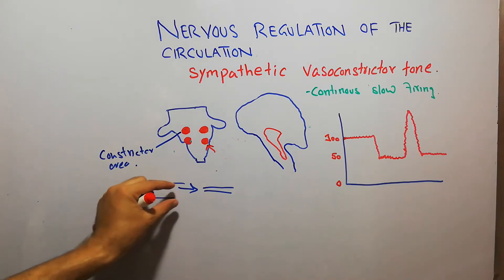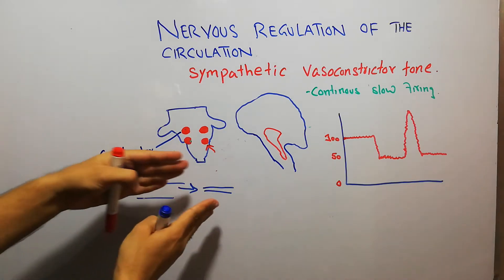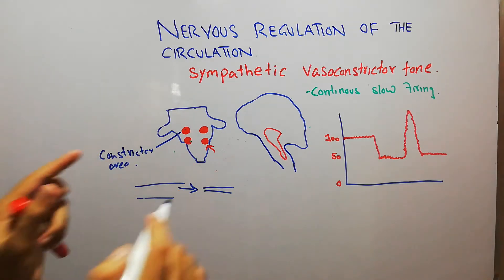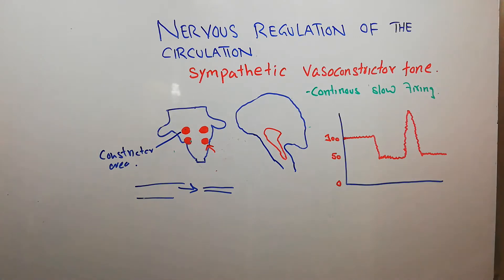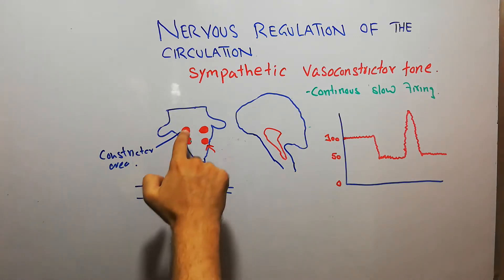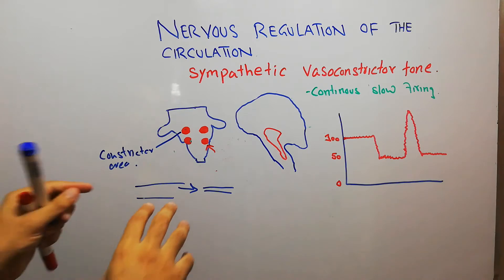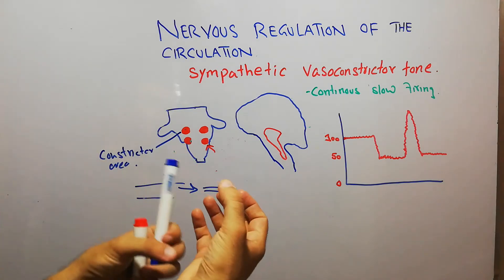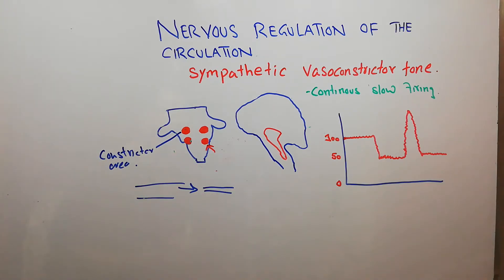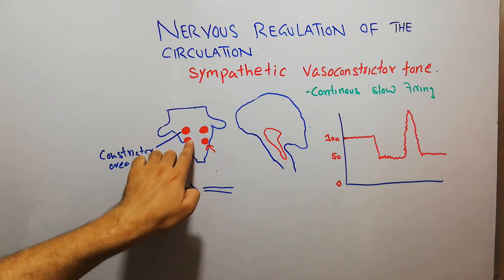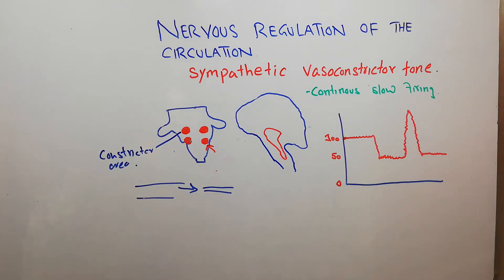With the help of the constrictor area, the diameter of the blood vessel decreases through increased tone. When this area is firing and sending impulses, it causes constriction of the blood vessel. The vasodilator area basically inhibits the vasoconstrictor area and helps in the dilation of the blood vessels.